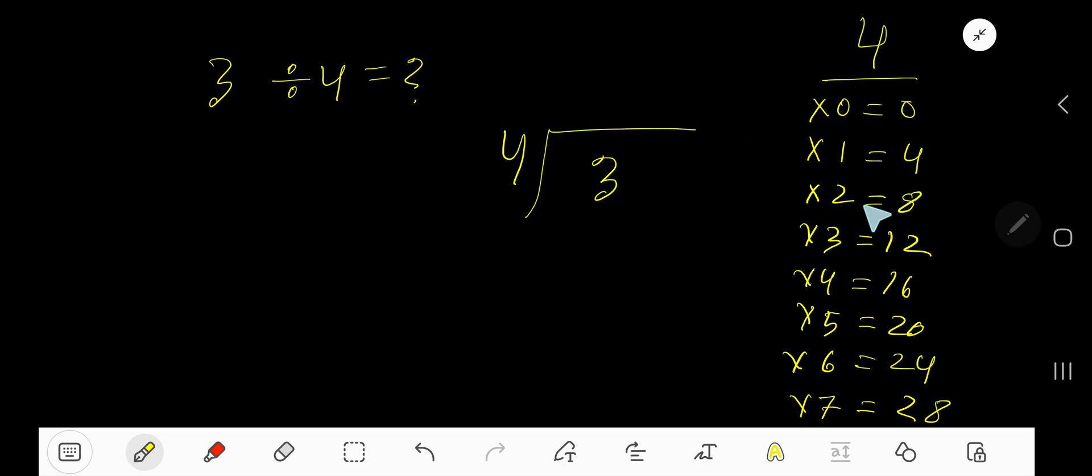4 times 0 is 0. 4 times 1 is 4. 4 times 2 is 8. 4 times 3 is 12. 4 times 4 is 16. 4 times 5 is 20. To find the multiplication table of 4, just add 4 to the previous step.